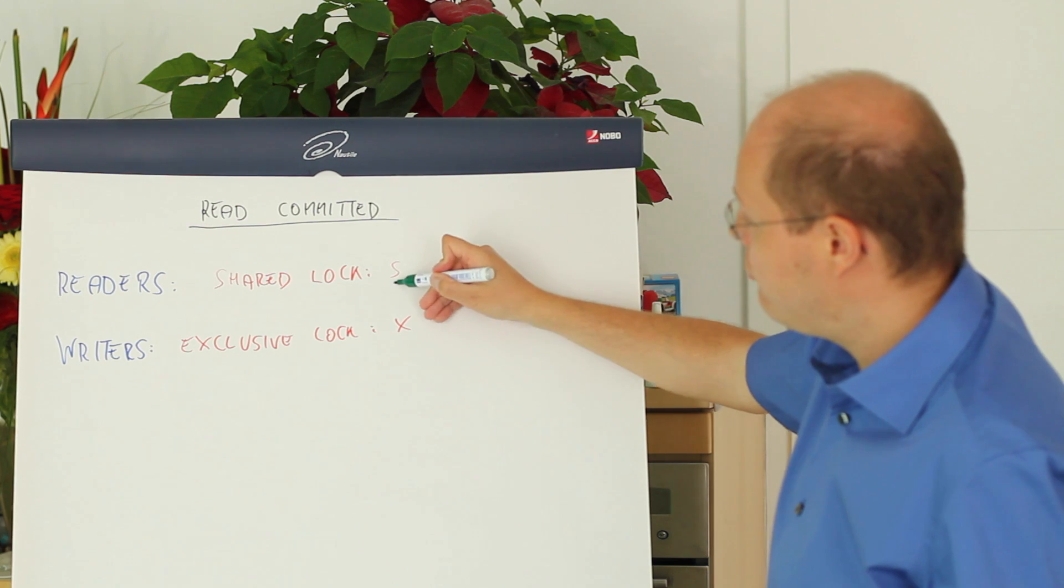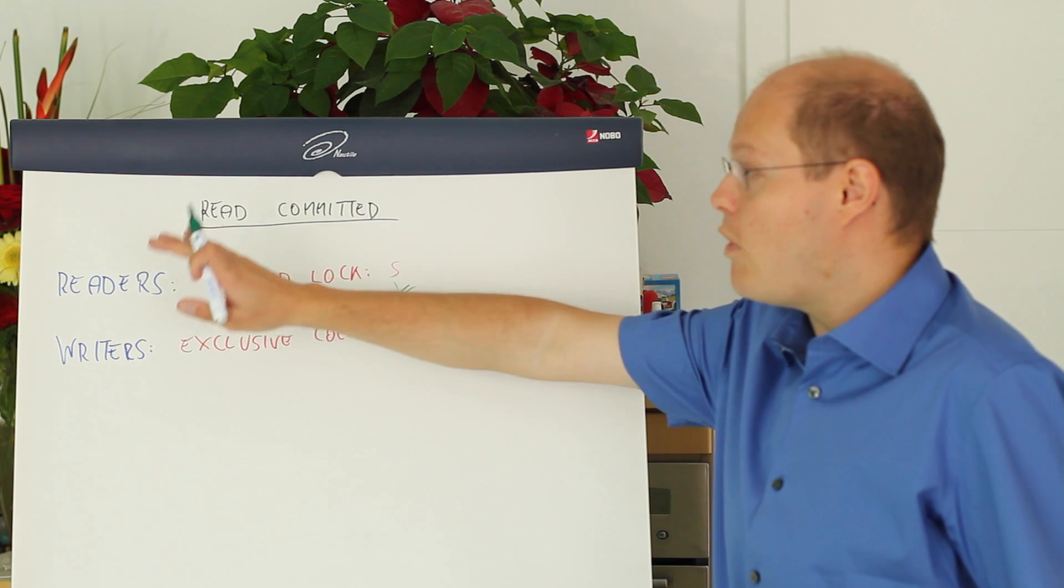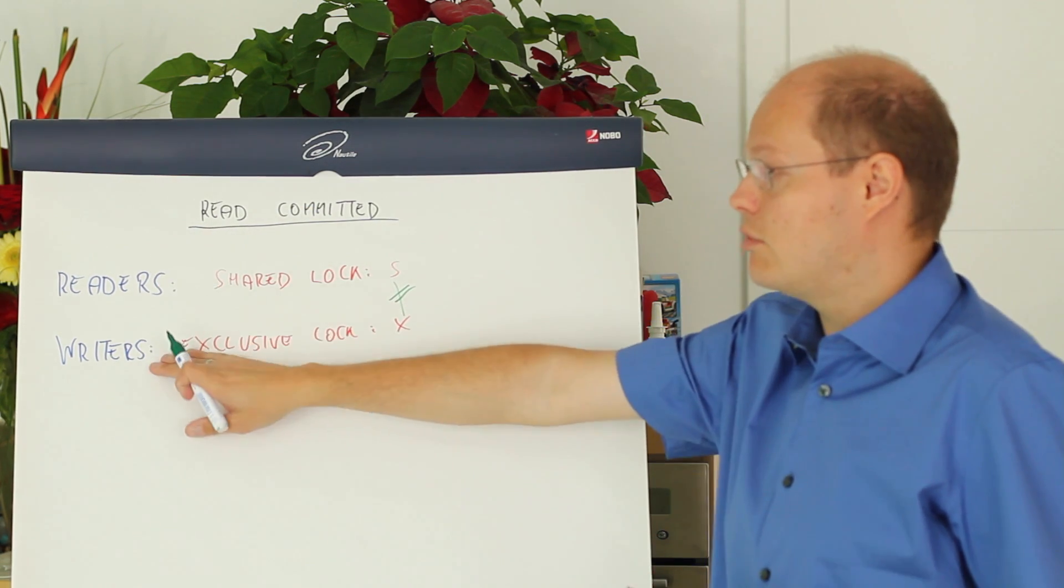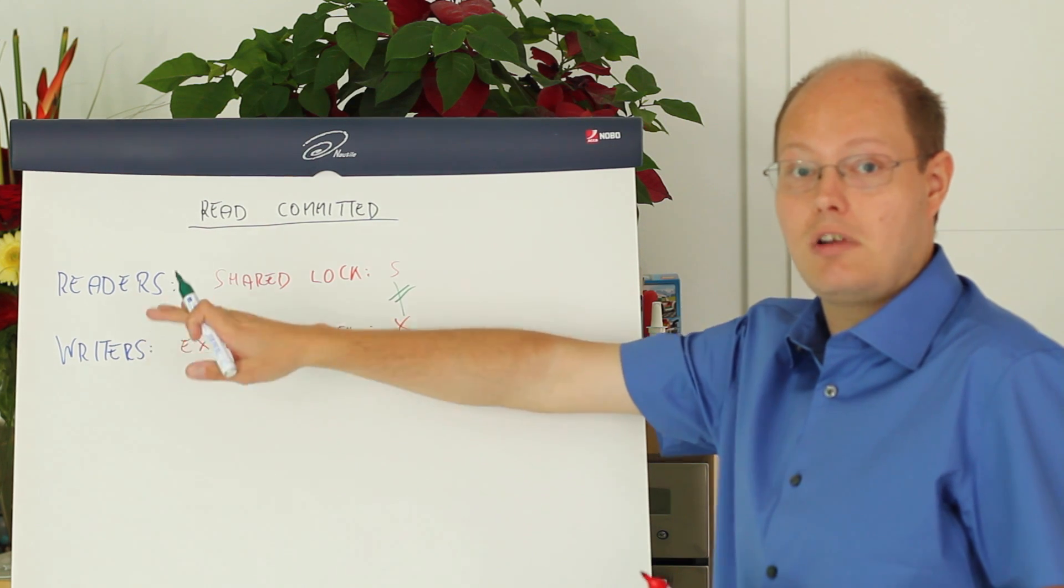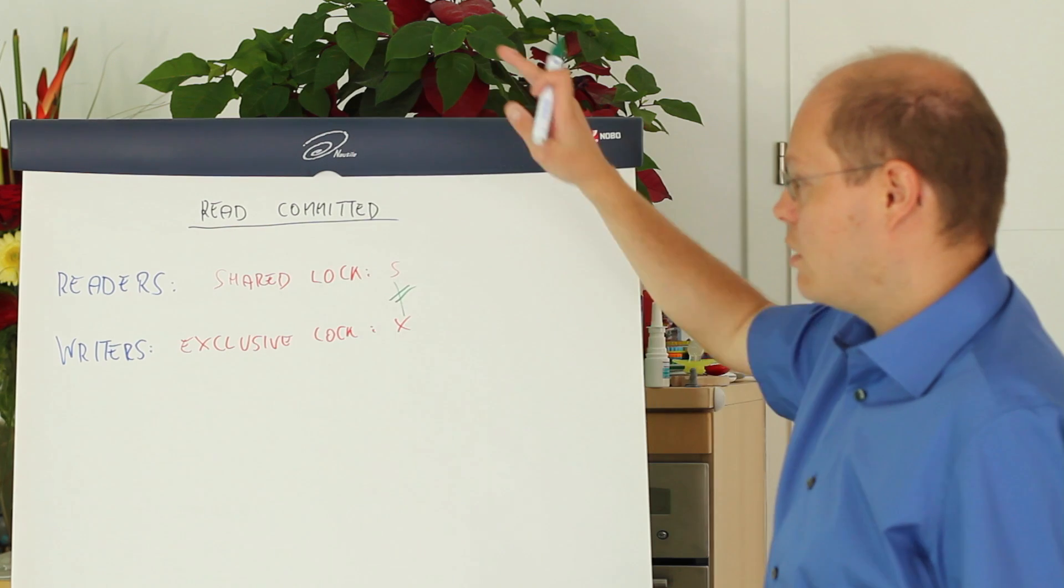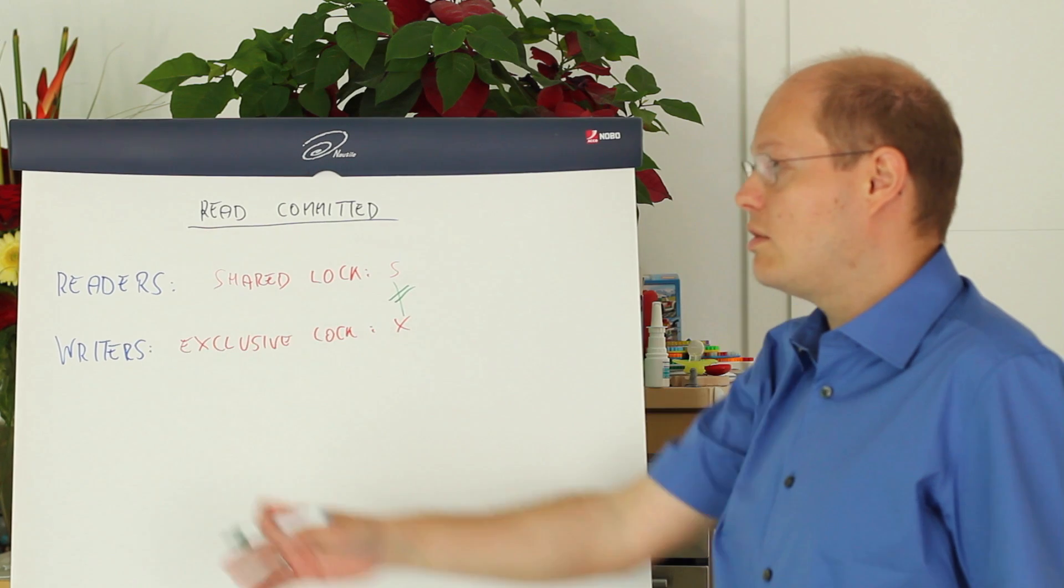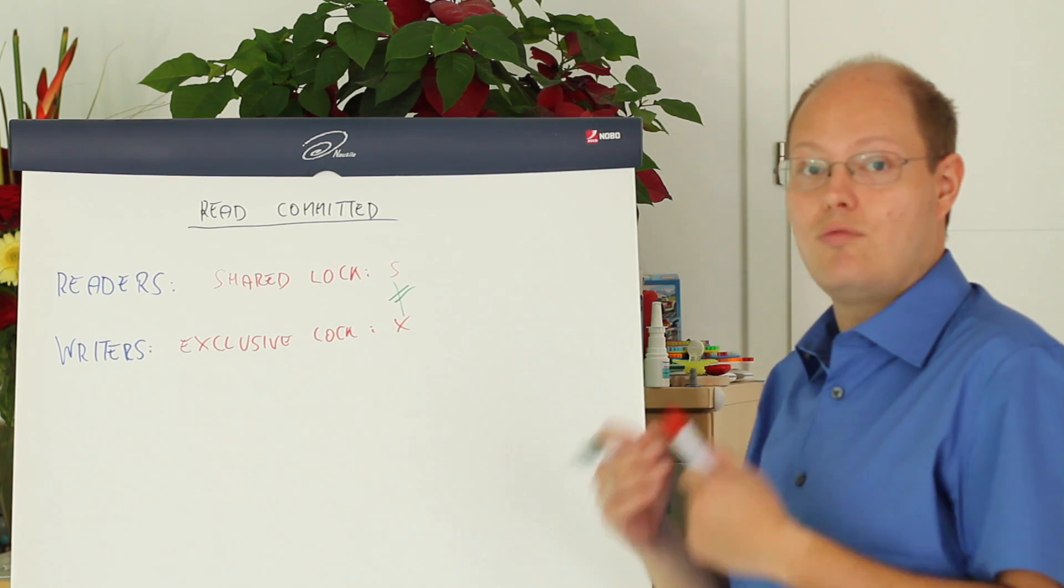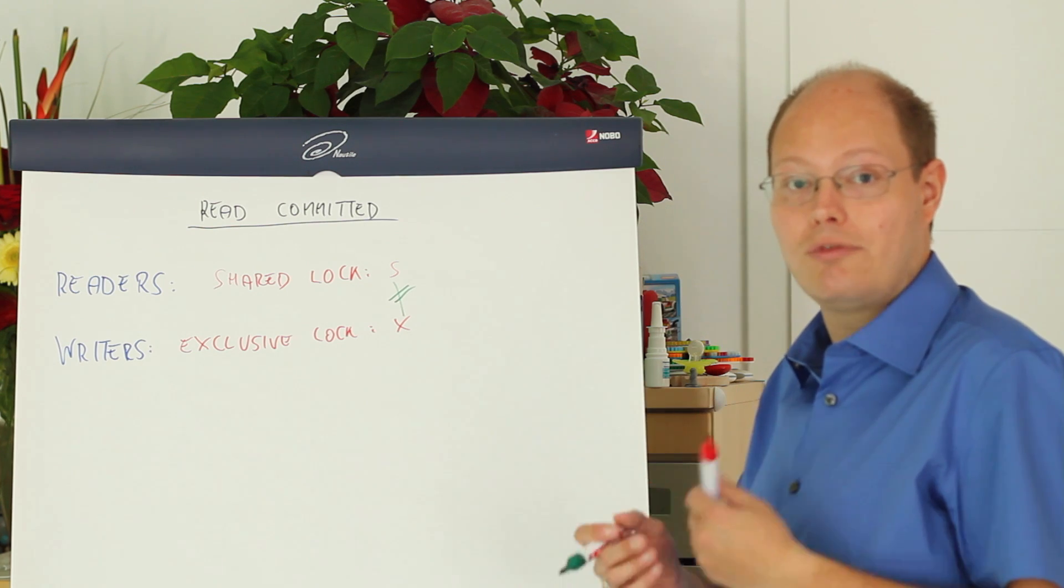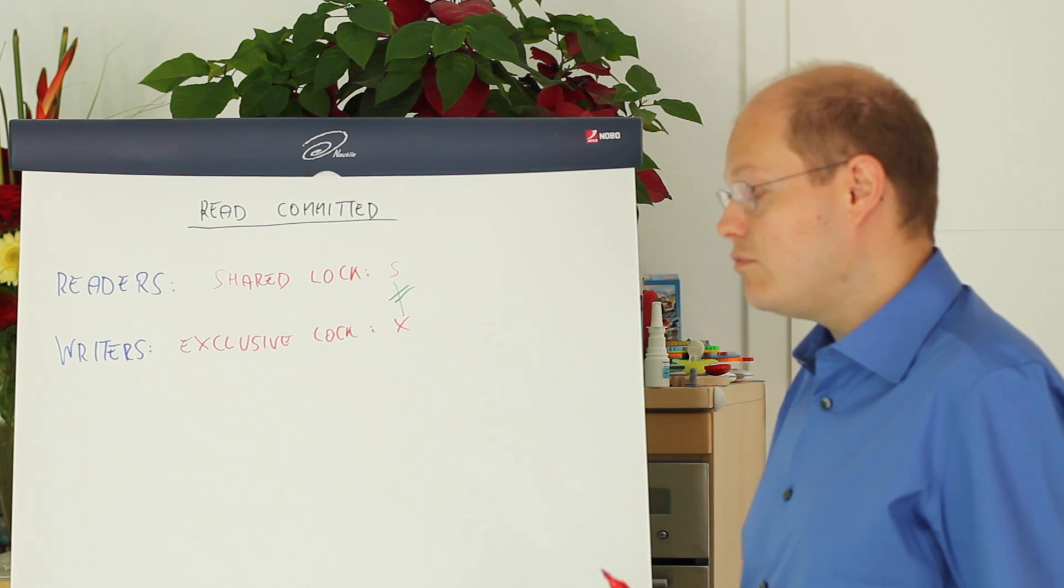And both locks are just incompatible to each other. Means when you have acquired a shared lock on a record you can't concurrently change that record. When you are changing a record and you have acquired the exclusive lock you can't read that record at the same point in time. And a writer also blocks a writer. Means as soon as an exclusive lock is involved you have a blocking situation in SQL Server.